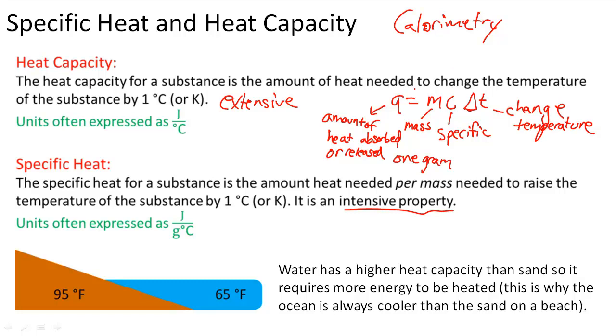If Q is negative then it's an exothermic process so it's losing energy, it's releasing energy. If Q is positive then it is absorbing energy and it's an endothermic process. That means absorbing energy and exothermic means releasing energy.